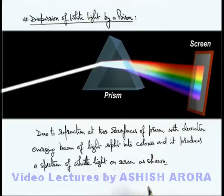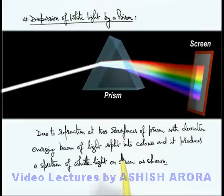Now the interesting fact to be understood here is: if this is not a prism but a glass slab, no spectrum will be obtained. In the next section we are going to discuss dispersion of light through a glass slab.